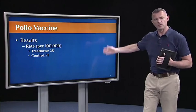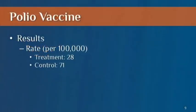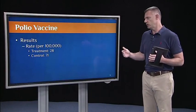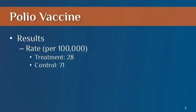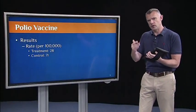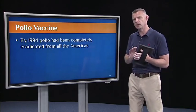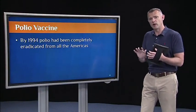The final results from several trials can be summarized here. This is the rate per 100,000. Children who were given the vaccine — 28 out of 100,000 went on to develop polio — versus the control who got a placebo, where 71 out of 100,000 developed polio. So almost three times more children who did not receive the vaccine went on to develop polio. Just looking at these numbers, this was a success story. The U.S. continued to use the Salk vaccine, and by 1994, polio had been completely eradicated from all of the Americas.